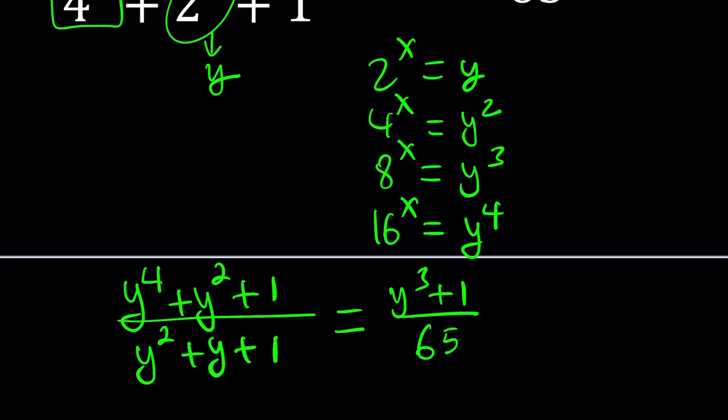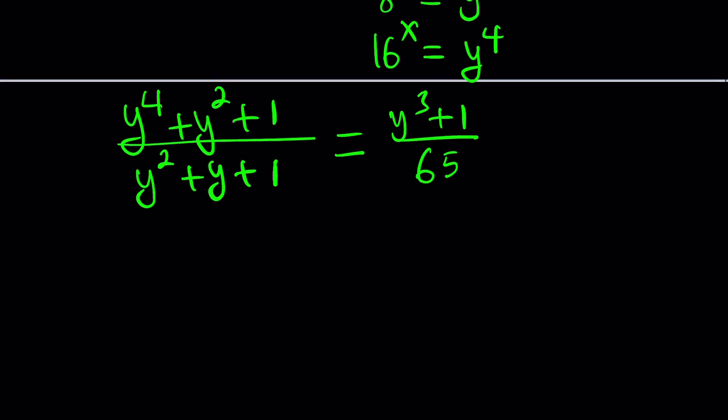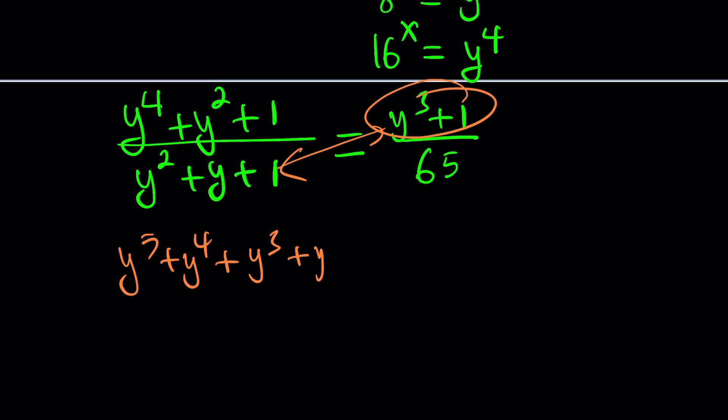Now let's cross multiply and turn this into something super messy. If you distribute this, y^5 + y^4 + y^3, and then distribute the 1 over here, and that equals 65 times this, which is 65y^4 + 65y^2 + 65.